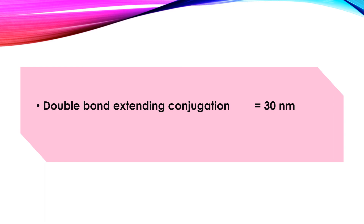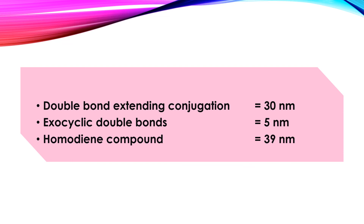Each extended conjugation increases absorbance by 30 units. Exocyclic double bonds increase absorbance by 5 units. The presence of a homoannular system — also called a homoannular unit or homodyne compound — increases absorbance by 39 units. What is an exocyclic bond and what is a homoannular unit — we have already learned these in our first session of the Woodward-Fisher rule for lambda max determination for the 1,3-butadiene system.